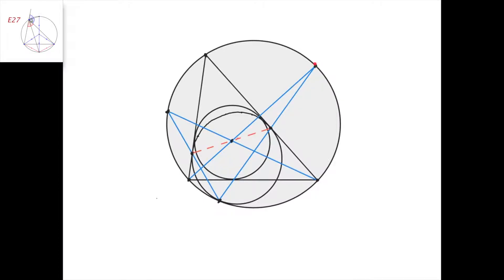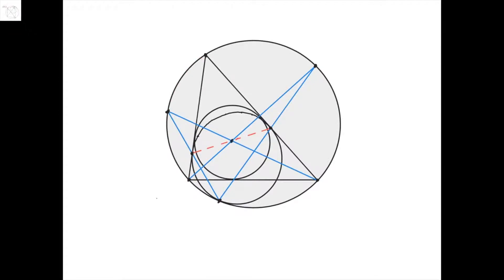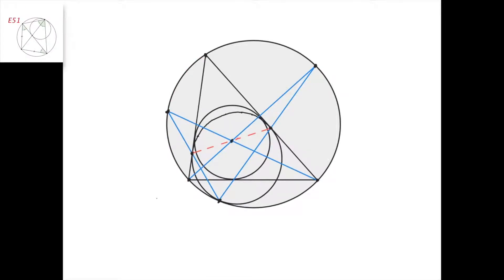We know that these angle bisectors intersect the circumcircle at points which are midpoints of the corresponding arcs. So this point is the midpoint of this arc, and this point is the midpoint of this arc. Now we have a chord in the circle, and we have this circle which is tangent to this chord at this point, and it is also tangent to the circumcircle at this point.